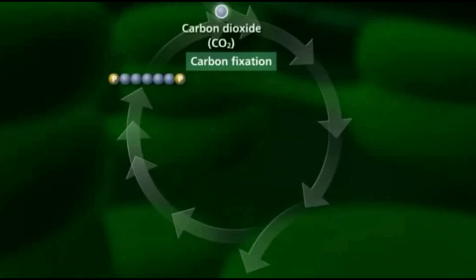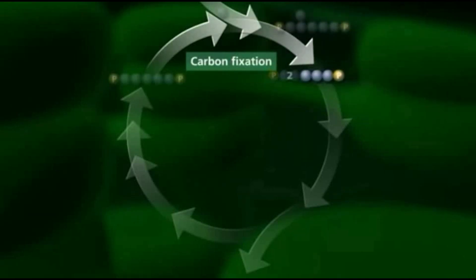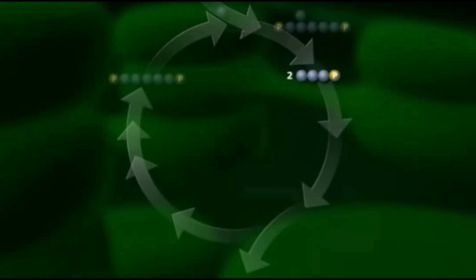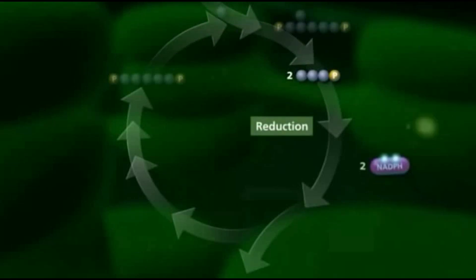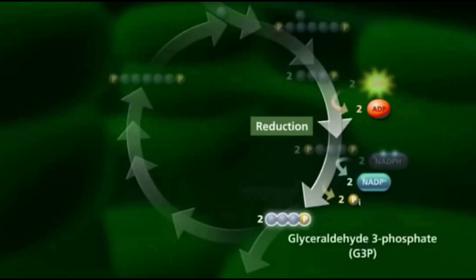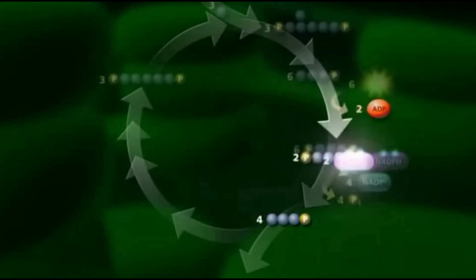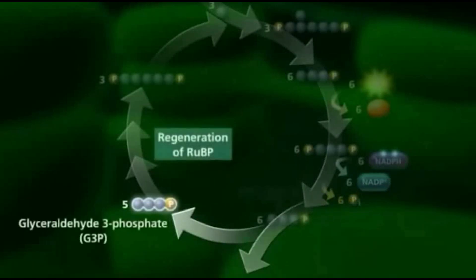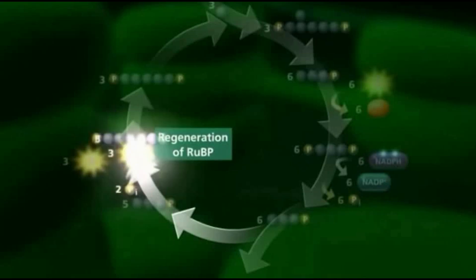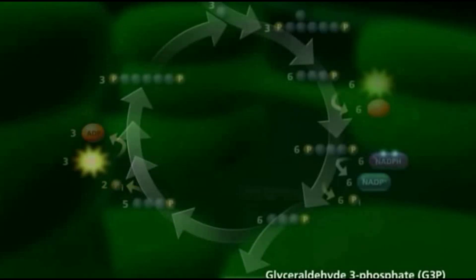In carbon fixation, carbon dioxide is attached to ribulose-1,5-bisphosphate (RuBP), resulting in a six-carbon molecule that splits into two three-carbon molecules. The second step is a sequence of reactions using electrons from NADPH and some ATP to reduce carbon dioxide. In the final step, ribulose-1,5-bisphosphate is regenerated. For every three turns of the cycle, five molecules of glyceraldehyde-3-phosphate are used to reform three molecules of RuBP. The remaining G3P is then used to make glucose, fatty acids, or glycerol. It takes two molecules of G3P to make one molecule of glucose phosphate.